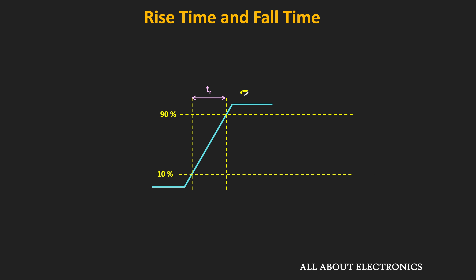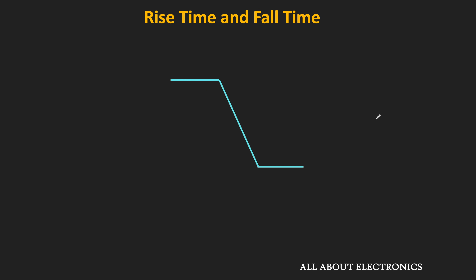So if the logic high corresponds to 5V, then the rise time is the time required by the signal to reach from 0.5V to 4.5V. Similarly, the fall time is the time required by the signal to reach from 90% to 10% of the signal amplitude. The rise time and the fall time can be same or different, but here we are assuming that both are the same.